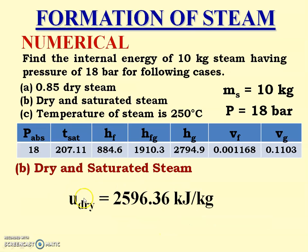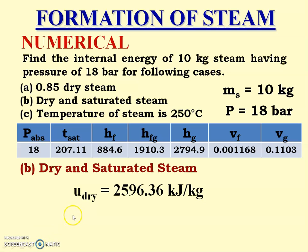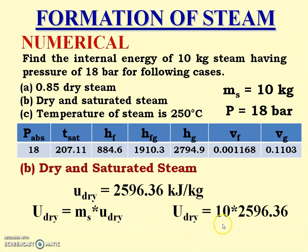Calculating, the specific internal energy of dry saturated steam = 2596.36 kJ/kg. Total internal energy U_dry = mass × specific internal energy = 10 × 2596.36 = 25963.6 kJ.